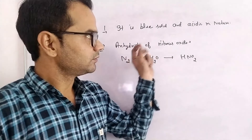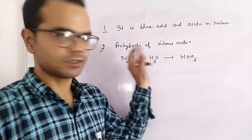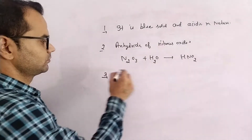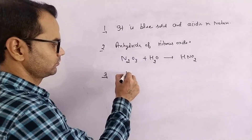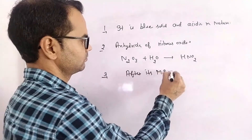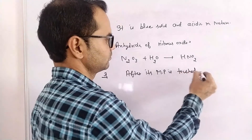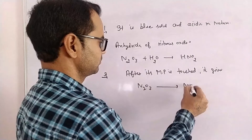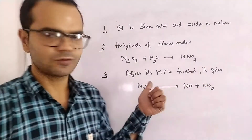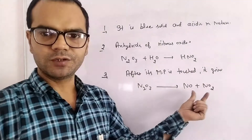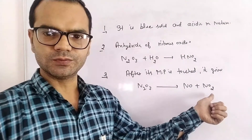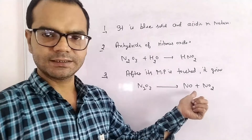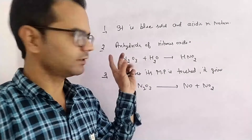N₂O₃ is stable only at low temperature. Above its melting point, it dissociates to give back NO and NO₂. We prepared it by cooling down, and when it is melted it reverts to the original reactants NO and NO₂. This is oxide number 3.